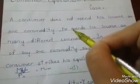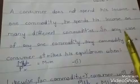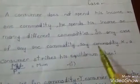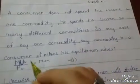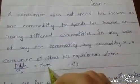A consumer does not spend his income on one commodity, he spends his income on many different commodities. In the case of any one commodity, say commodity X, a consumer strikes his equilibrium when MU X upon price PX is equal to MU M.